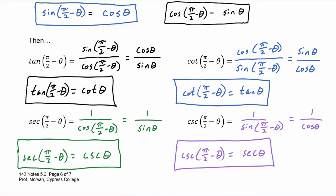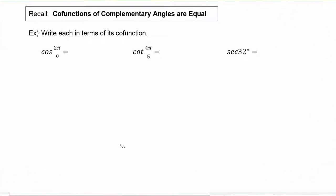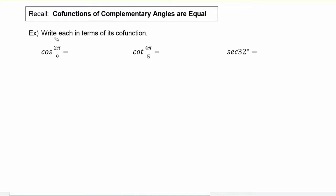Next we'll get some practice applying all of these co-function identities. We've just proved all six co-function identities, and we've learned that we can sum that up by saying that co-functions of complementary angles are equal to each other. So in this example where we have to write each in terms of its co-function, we know that the cosine of two pi over nine means we just set it equal to the co-function, which is sine, of its complementary angle, which is pi over two minus two pi over nine in radians.